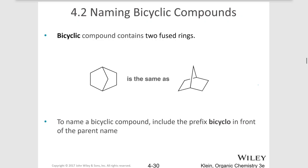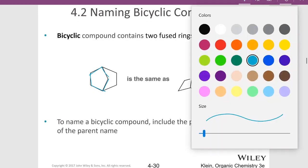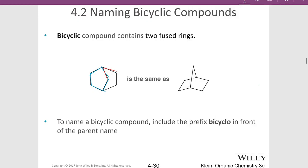Bicyclic compounds contain two fused rings — in other words, we have a ring that goes one way and then another ring that goes another way, so we have two rings fused together. Notice that if we turn this molecule up where the one-carbon bridge is facing the top, the molecule on the left is the same as the molecule on the right. If you're struggling with that, you might want to use your model kit to convince yourself they are the same molecule.